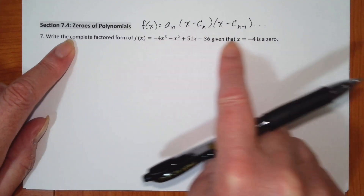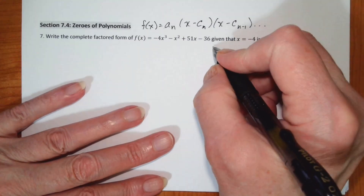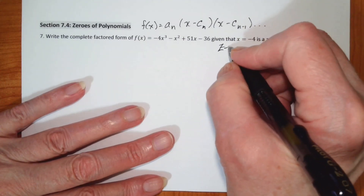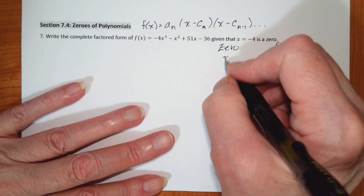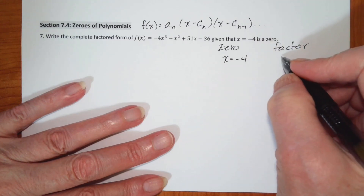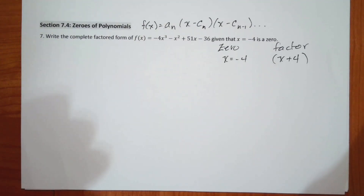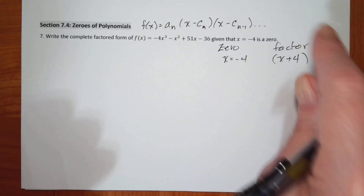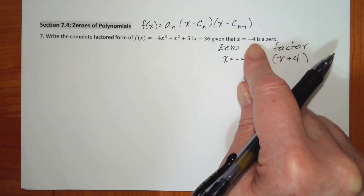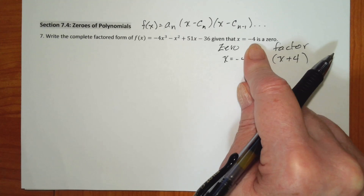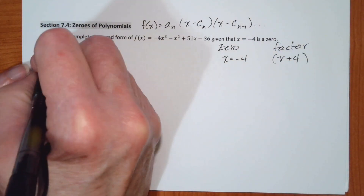We want the complete factored form given that x minus 4 is a zero. If we have a zero, then we have a factor that goes along with it. So a zero of x equals negative 4 gives us a factor of x plus 4. That's one of our factors and it's a linear factor. If we know this is a zero, dividing by negative 4 will give us a remainder of zero, and then we can work with the polynomial that's left.